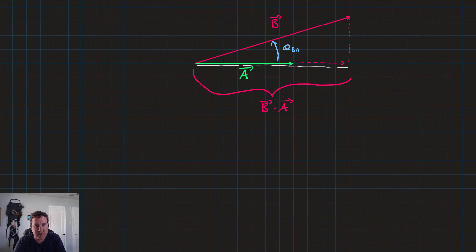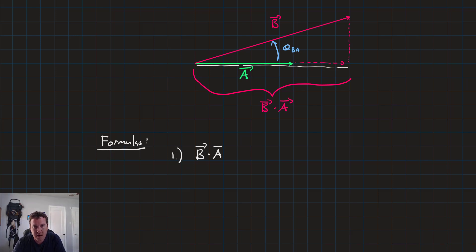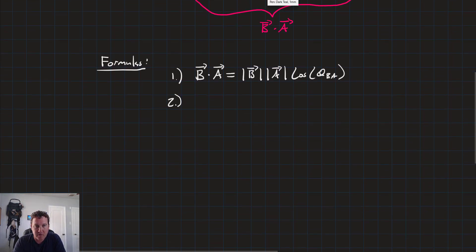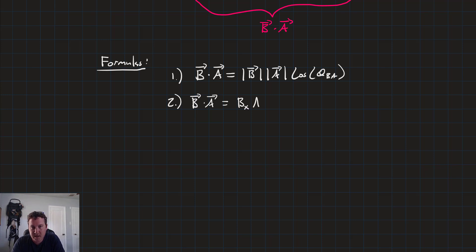There are a number of different formulas that let us calculate the dot product. The first is called its geometric representation: b dot a equals the magnitude of b times the magnitude of a times the cosine of the angle between them. A simpler formula is that b dot a equals the sum of the components multiplied together: bx times ax, plus by times ay, plus bz times az.